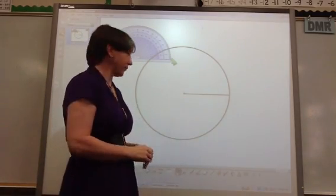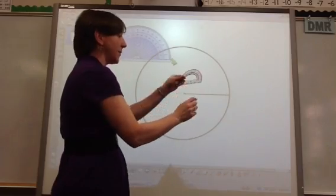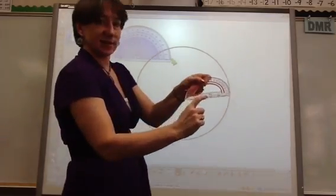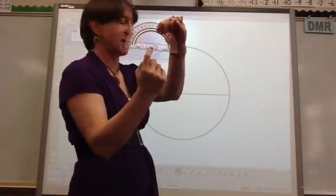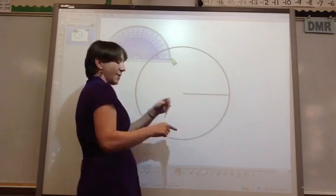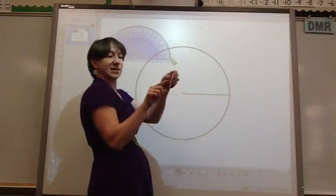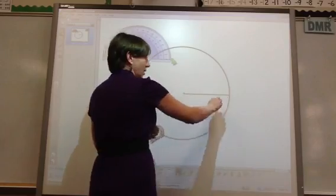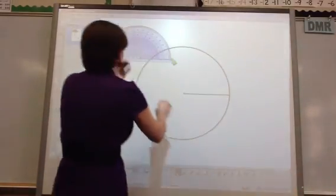From there, I would take my protractor and I would take the center point right inside there, and I would put it on the center of my circle. Then I would line up the baseline or the zero line on my protractor along that line.